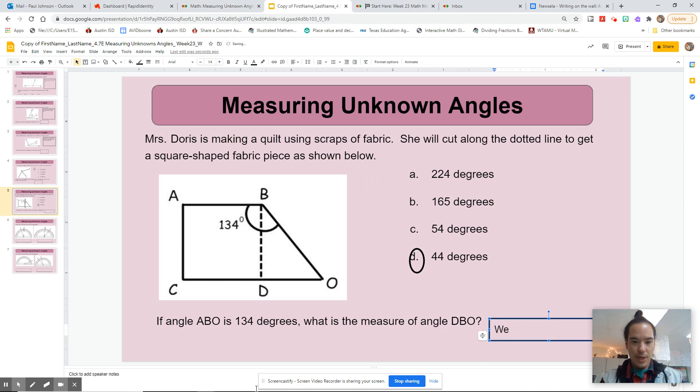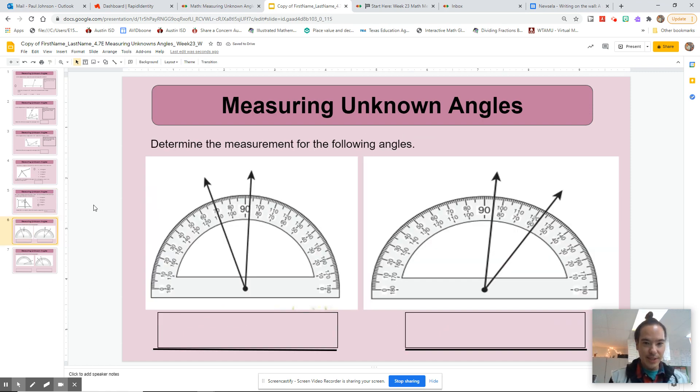We can just say 134 minus 90. Okay. Page 6. Determine the measurement for the following angles.